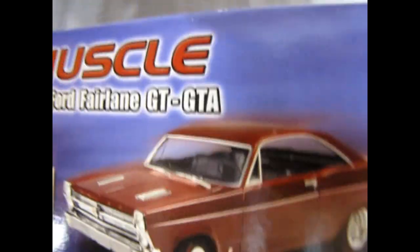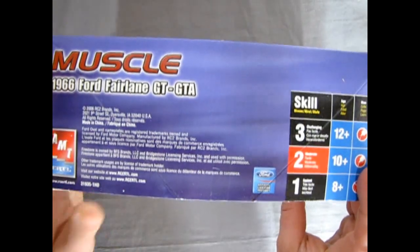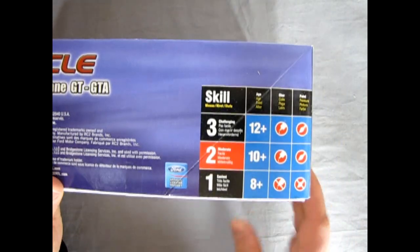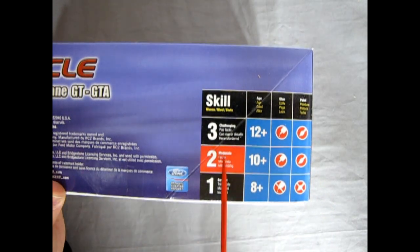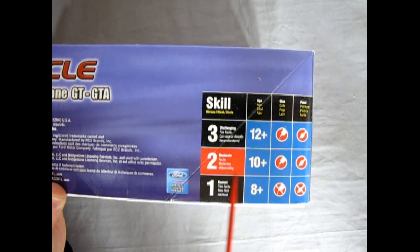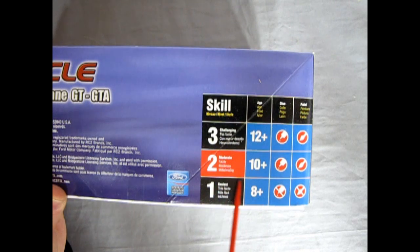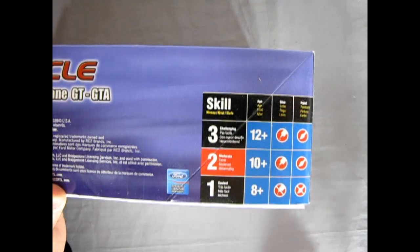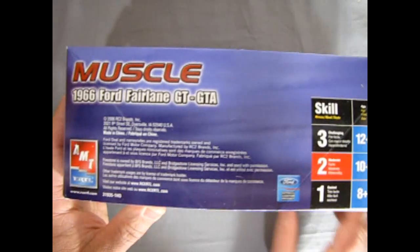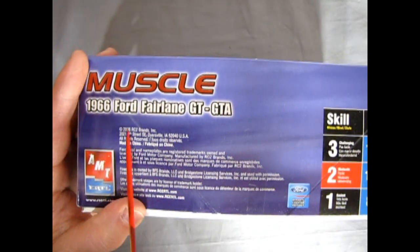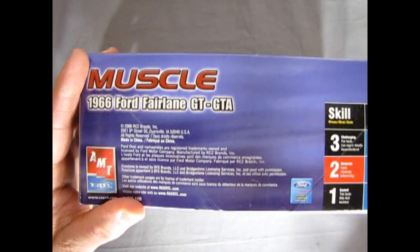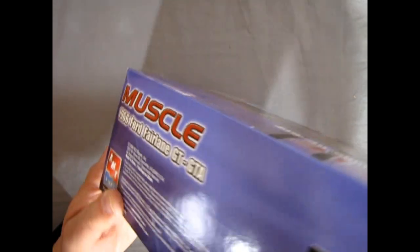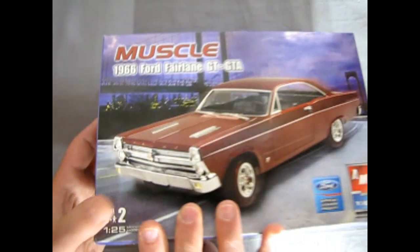Anyway, here we have the side of the box, and, of course, this is a skill level 2 kit. Moderate difficulty. For ages 10 and up, you will need glue, you will need paint. And, as we can see, RC2 brought this out in 2006, which is pretty much near the end of RC2 as a brand, before it got bought up by round 2.